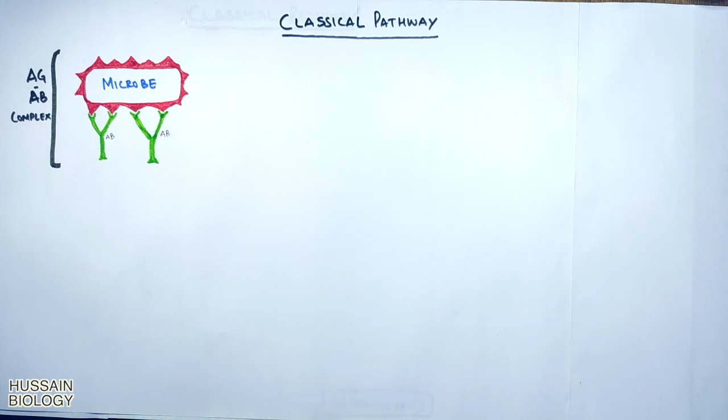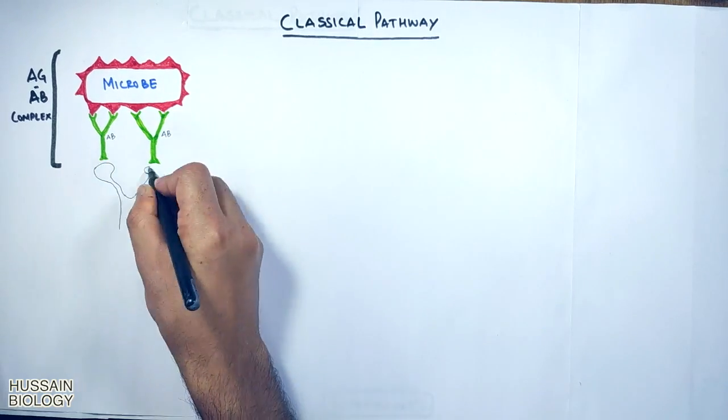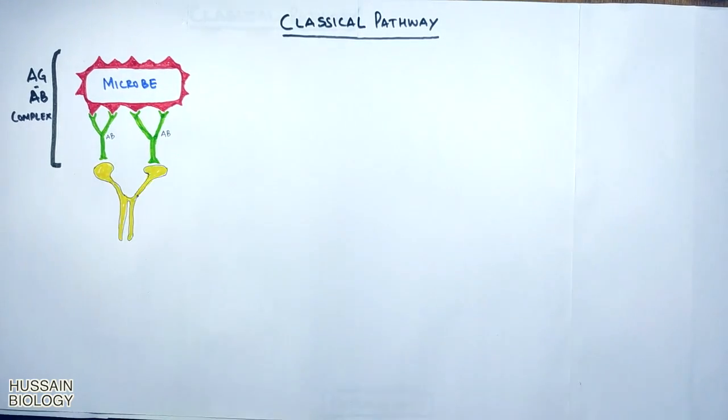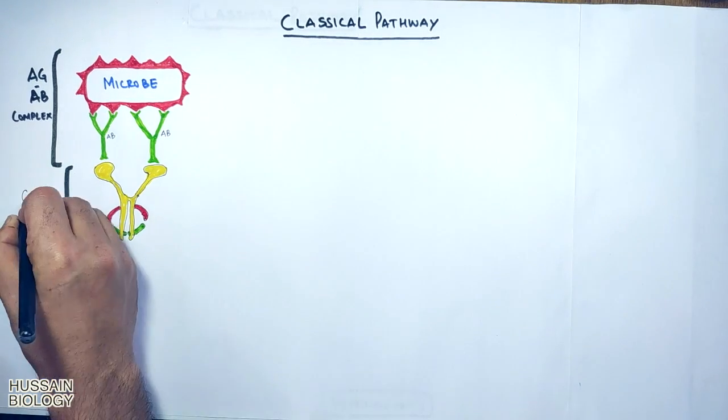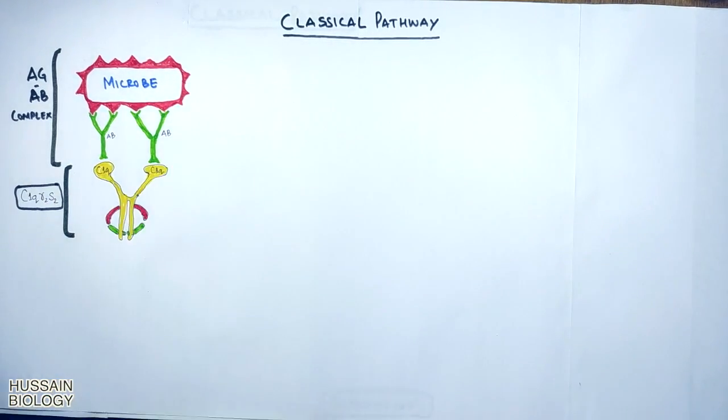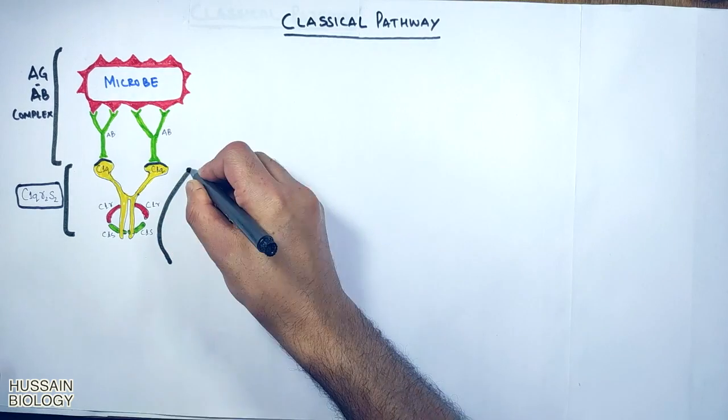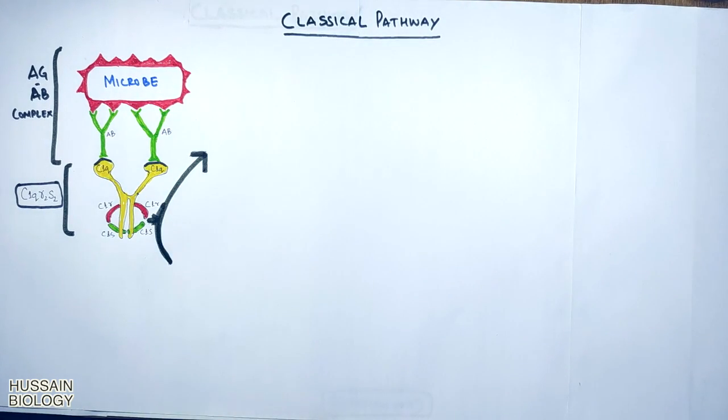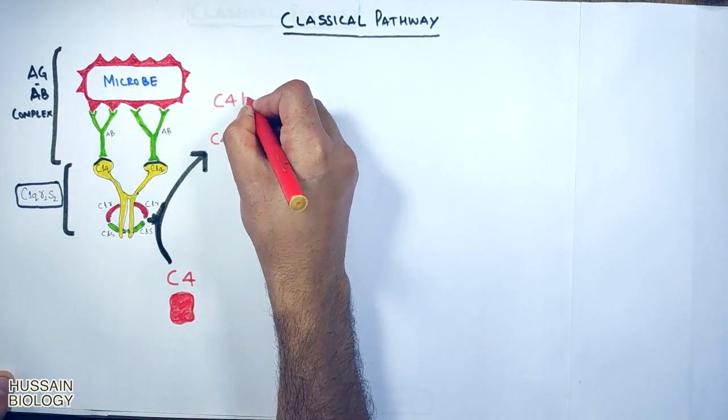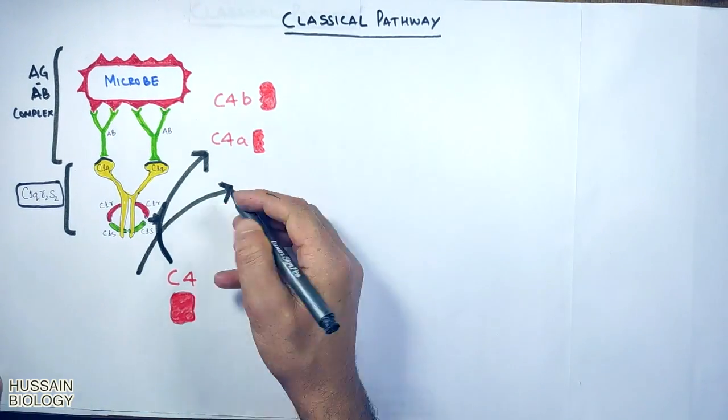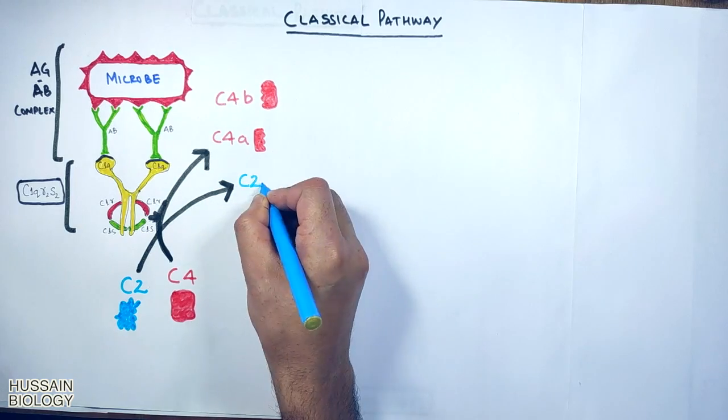After that, complement protein starts to work. First, C1 protein comes into action in the form of complex. C1 complex binds with the antibody bound to antigen. This C1 complex is C1qr2s2. When this C1 complex binds with the antibody it gets activated and starts cleavage. First it cleaves C4 into C4a and C4b, then it cleaves C2 into C2a and C2b.